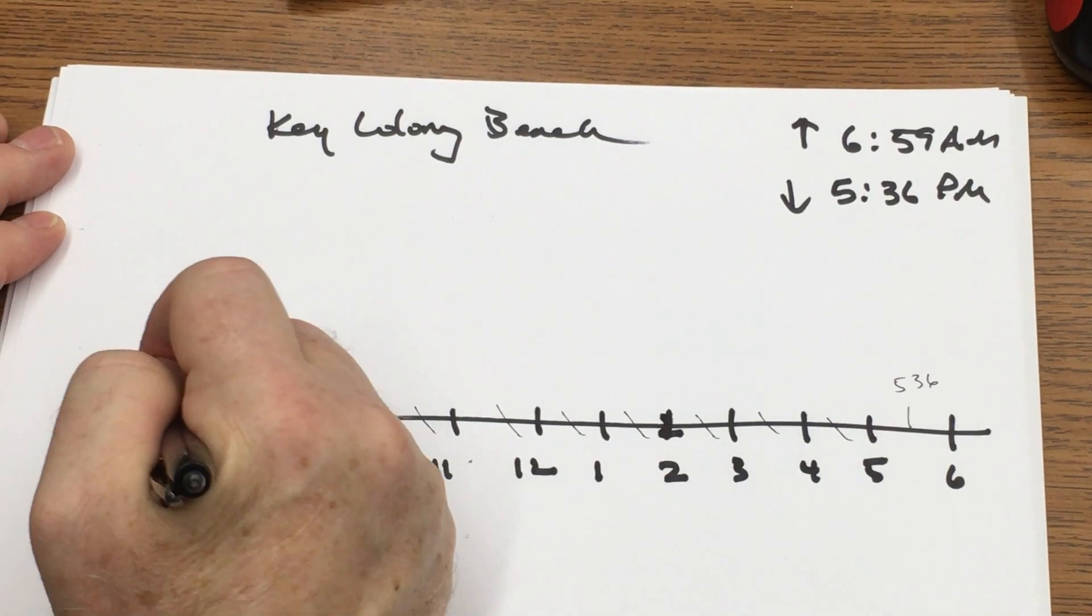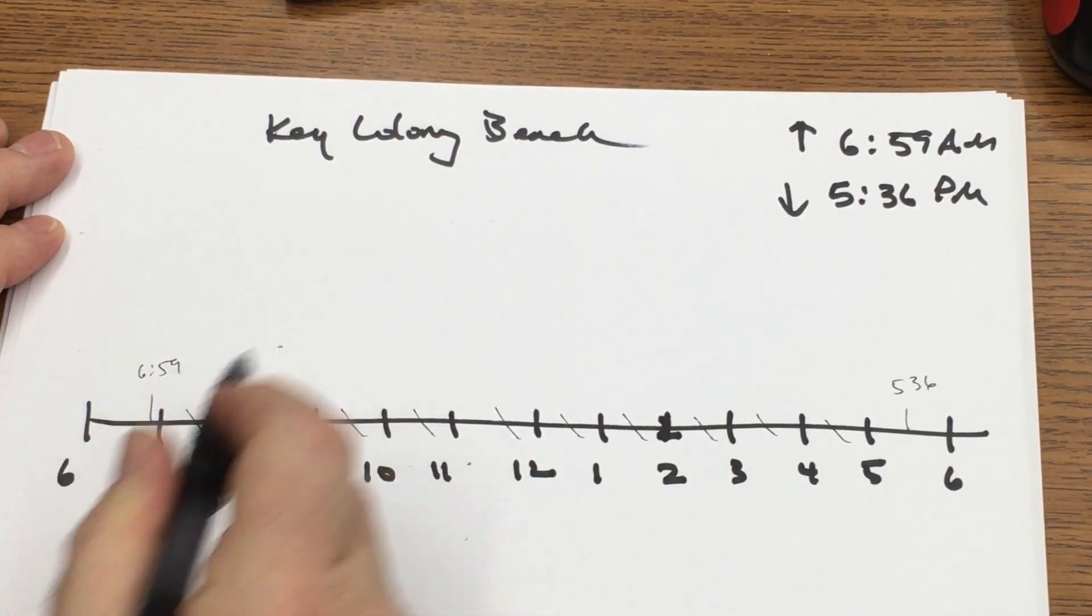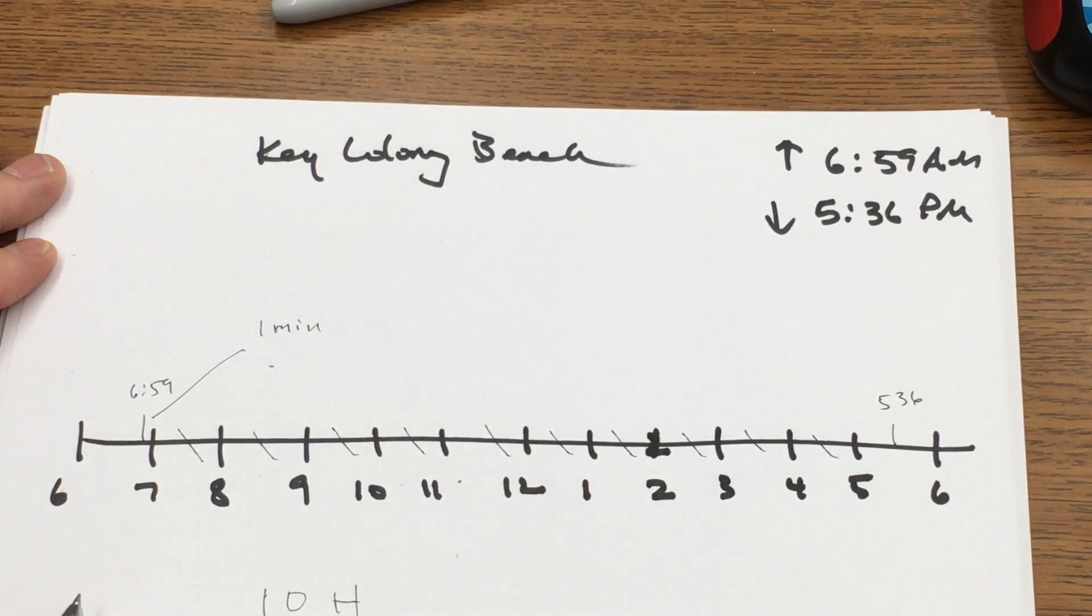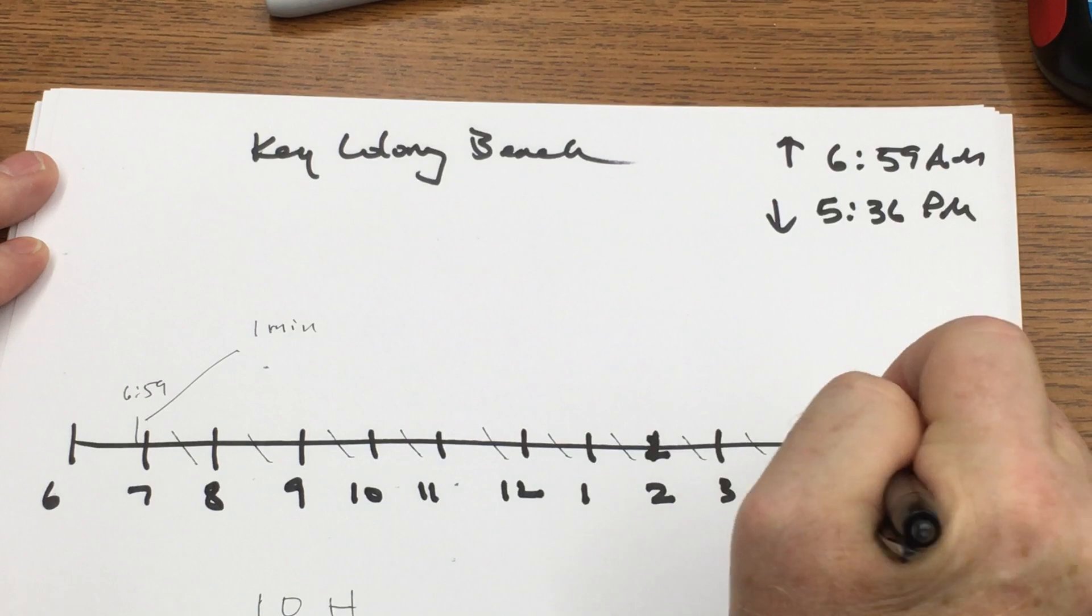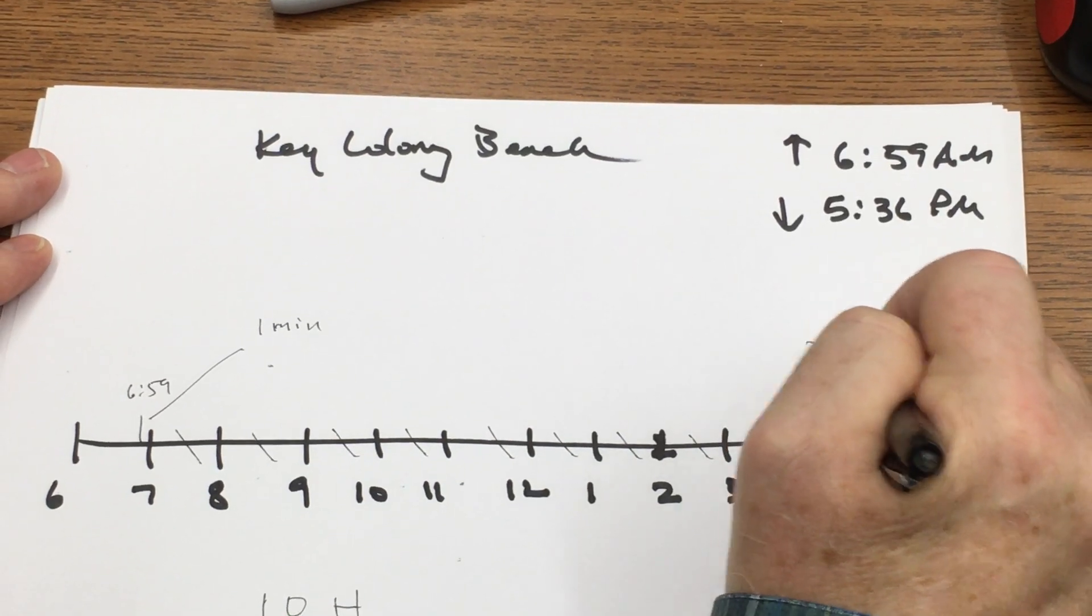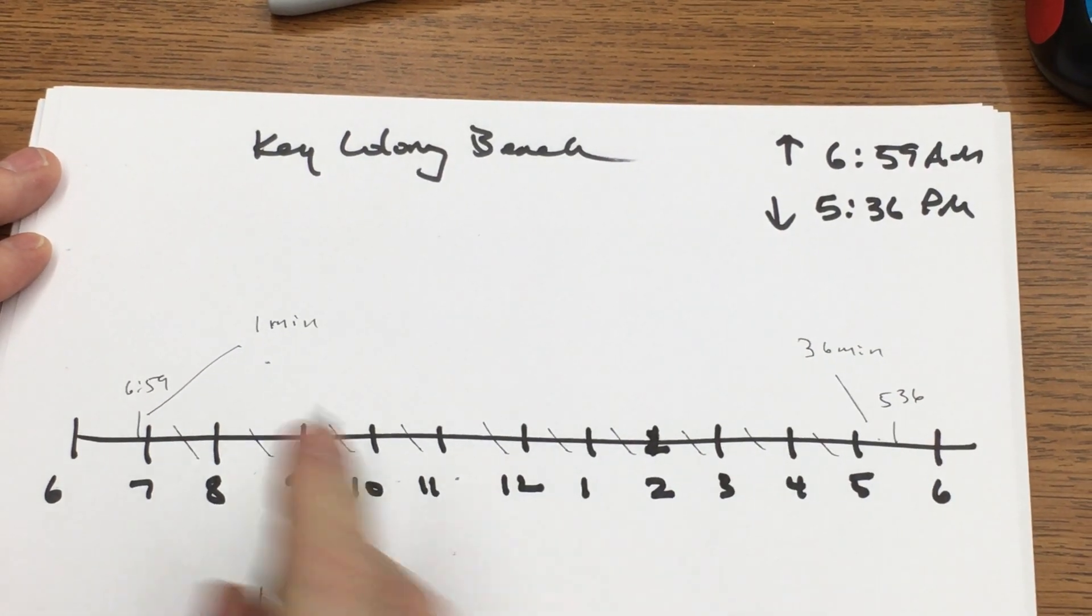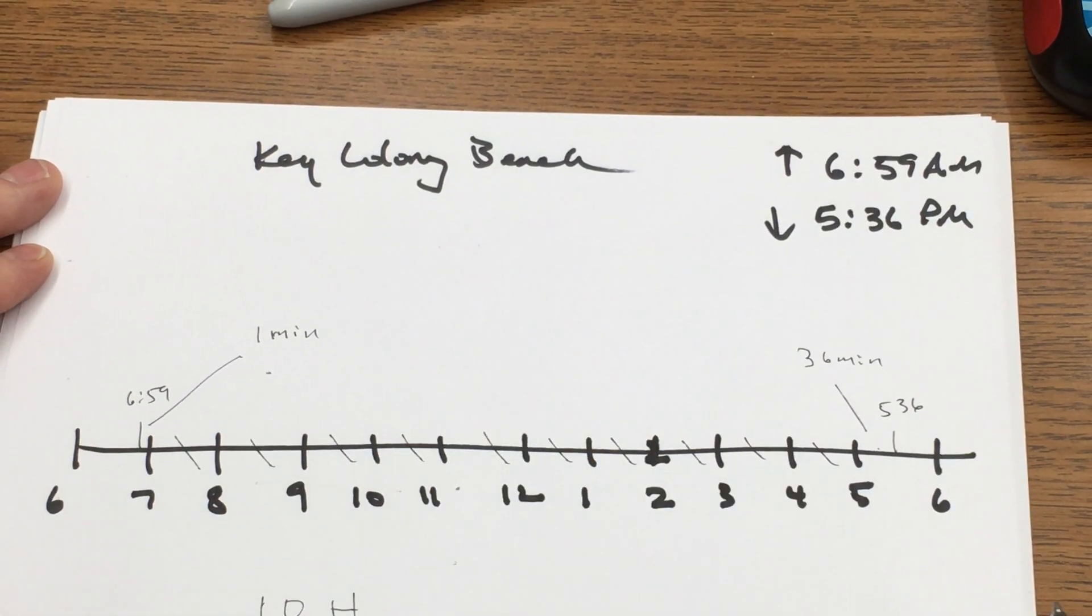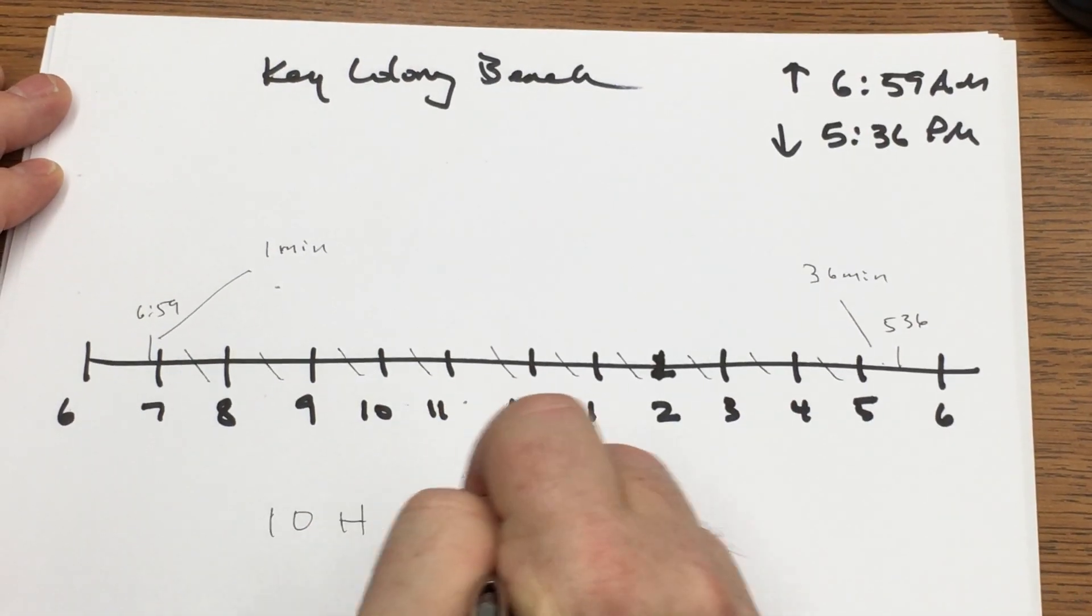Also notice from here to here I have one minute. From here to here I have 36 minutes. I can take one minute and 36 minutes and add them together to get 37 minutes.